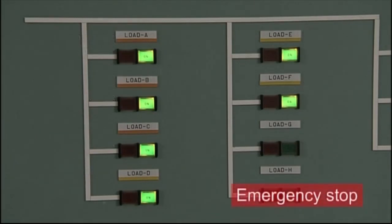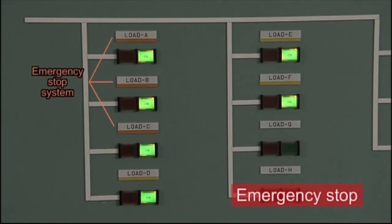Let's see what happens during an emergency stop. Suppose a fire has broken out in the engine room and a crew member has pushed the emergency stop button. Upon receipt of this signal, the MCCB shuts down the circuit and the lamp for the emergency stop system is extinguished.